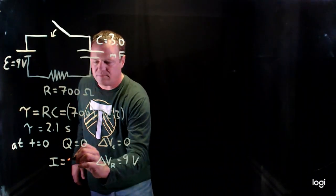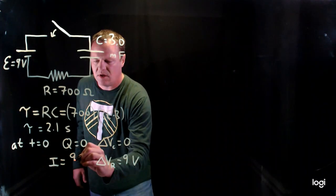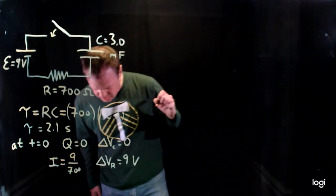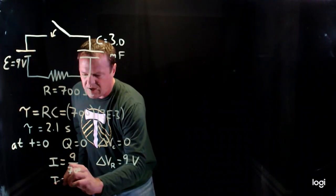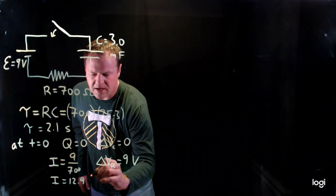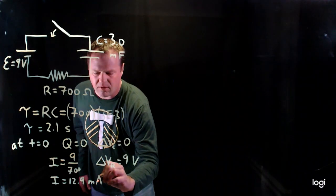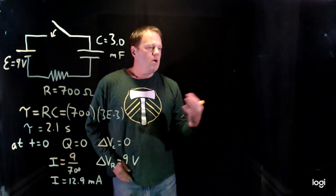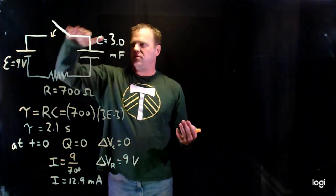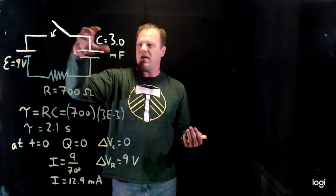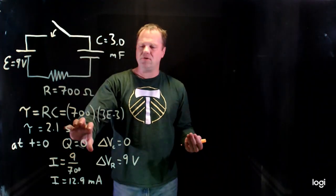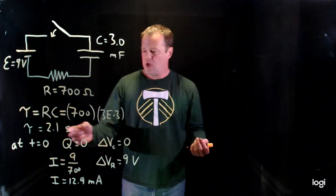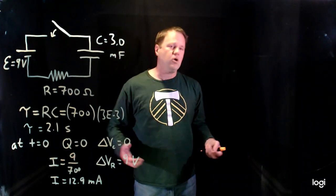We just use Ohm's law. We take the voltage divided by the resistance, throw that into the calculator, and get an answer of 12.9 × 10⁻³ — so 12.9 milliamps. So that's what happens right at first. We close that switch, charge hasn't had a chance to migrate to the capacitor, so it's uncharged with no voltage. The resistor gets all of the voltage, and then we calculate the current using Ohm's law.